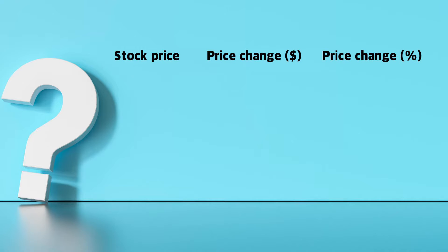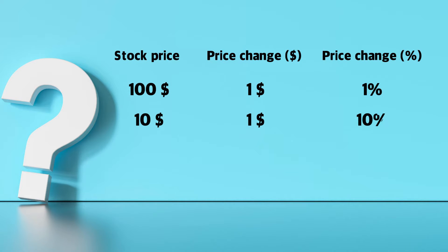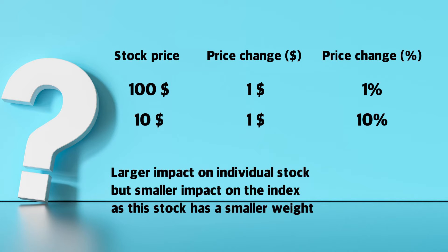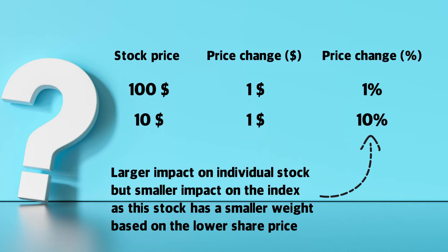Because the Dow Jones is price weighted, a price change of say $1 will have a larger effect on the index if it happens in a stock with a higher price than a stock with a lower price. For example, if a stock priced at $100 drops by $1, that's a 1% drop. But if a stock priced at $10 drops by $1, that represents a 10% drop. So for the stock with a lower price, the $1 drop represents a larger actual decline — yet in a price weighted index, the $100 stock has a much higher weight, so that same $1 drop has a larger effect on the index.